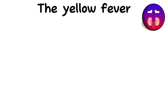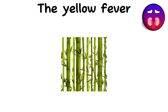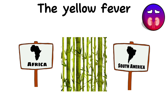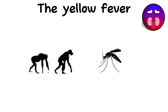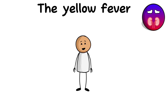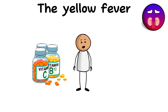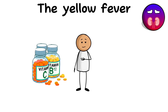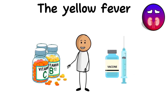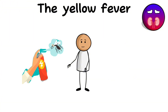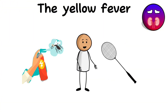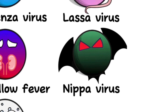This virus is common in tropical and subtropical regions of Africa and South America, where it can cause epidemics with high mortality. The main reservoirs of the virus include monkeys and certain types of mosquitoes. Treatment of yellow fever includes symptomatic therapy to relieve symptoms and maintain organ function. Prevention includes vaccination before traveling to endemic areas, the use of mosquito repellents, and the wearing of protective clothing.